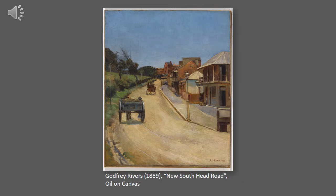Godfrey Rivers' 1889 oil on canvas titled New South Head Road encapsulates the next chapter in this story about a changing landscape. The artist has captured a snapshot of early colonial life along what is now one of Sydney's major thoroughfares, the New South Head Road, located in the eastern suburbs. This painting takes its audience back in time to 19th century Sydney when unsealed roads and horse and carts constituted much of Australia's primary form of transport infrastructure.